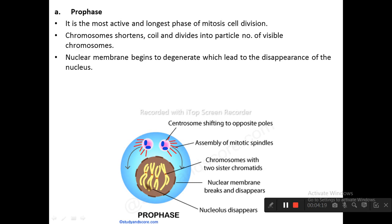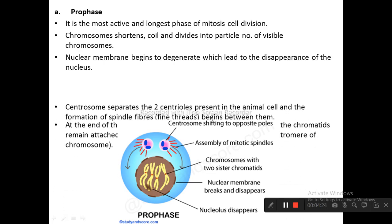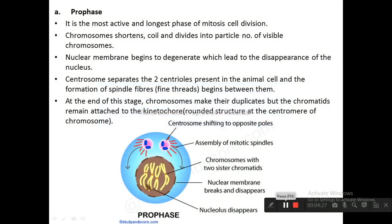The nuclear membrane begins to degenerate, leading to the disappearance of the nucleus. Centrosomes separate the two centrioles present in the animal cell, and the formation of spindle fibers begins between them. At the end of this stage, chromosomes make their duplicates but the chromatids remain attached to the kinetochore — a rounded structure at the center of the chromosome. This can be seen in the prophase diagram.